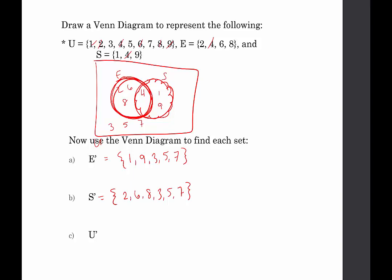Lastly, what's in the complement of the universe? Well, the universe represents everything, so there's nothing that's not there. The complement would be nothing, and we represent nothing in set theory with either the empty set — there should be nothing in that set — or the null set. Hopefully this was a nice introduction to Venn diagrams. Thank you for stopping by.